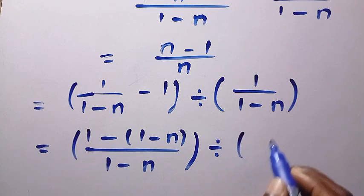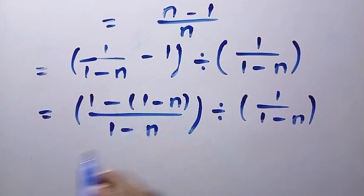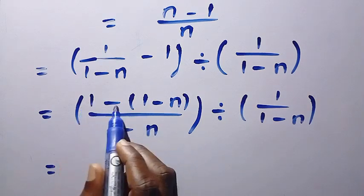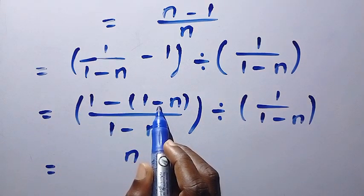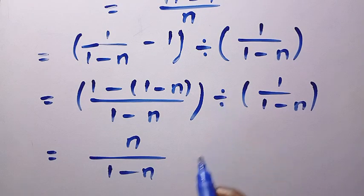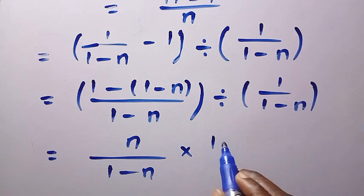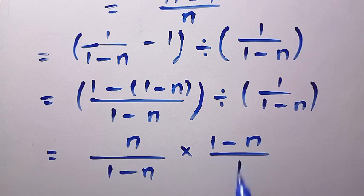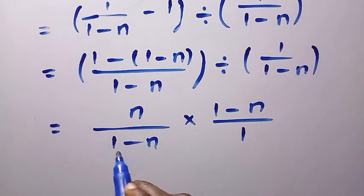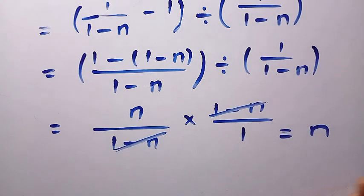Dividing by 1/(1 minus n), when we expand and open this out, we get 1 minus (1 minus n), which gives us plus n. The minus 1 and plus 1 cancel, and we have n divided by (1 minus n). This is then divided by 1/(1 minus n), which changes to multiplication by flipping, giving (1 minus n) divided by 1. So the (1 minus n) terms cancel and we are left with just n.